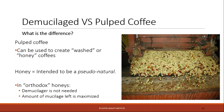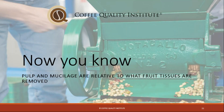Honey is really intended to be a pseudo-natural, or anywhere in between the washed profile and the natural profile. In a traditional or orthodox honey, a demucilager is not needed, but a pulper is used, and the amount of mucilage left is maximized to get that honey flavor. Producers now manipulate that very finely to get more or less mucilage, and either way you can make a honey coffee and theoretically change the flavor profile. So now you know pulp and mucilage are basically relative terms for what fruit tissues are removed — botanically, it's all fruit.